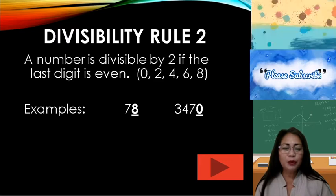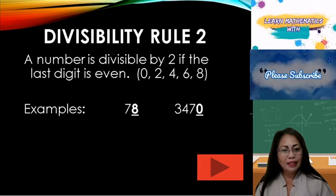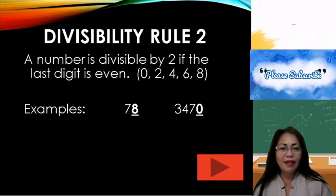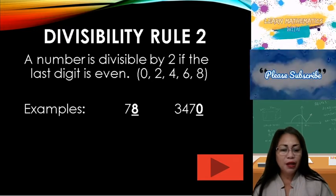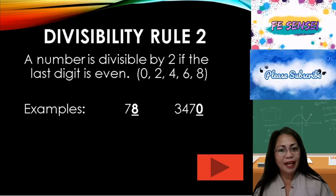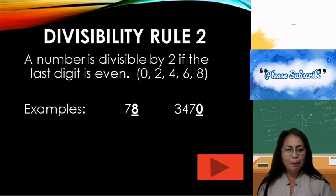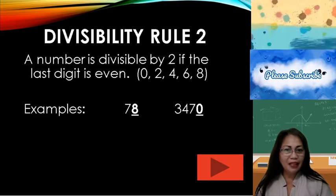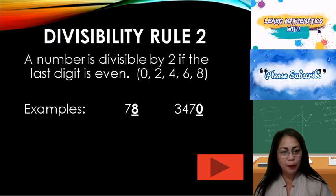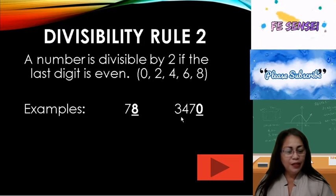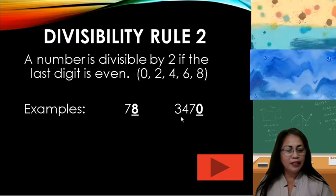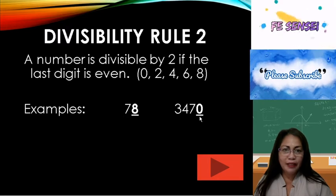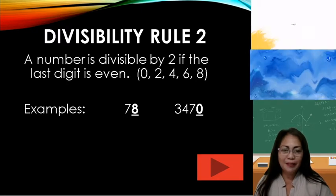Divisibility rule 2: A number is divisible by 2 if the last digit is even, or it ends with 0, 2, 4, 6, and 8. Example: 78 — it ends with 8, therefore 78 is divisible by 2. Another example: 3,470 — it ends with 0, therefore the number is divisible by 2.